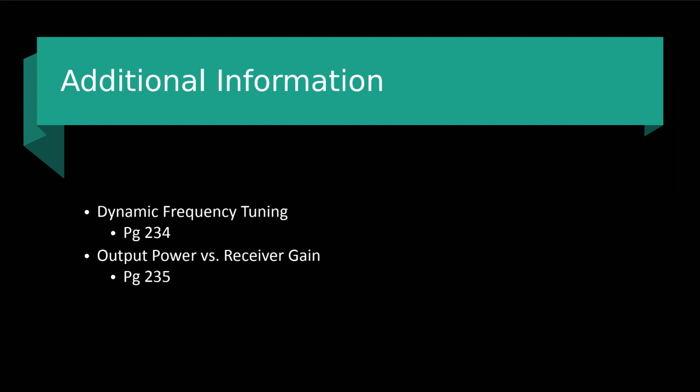Make sure you're reading up on dynamic frequency tuning, and review the difference between transducer output power and receiver gain on page 235 of the textbook. A lot of information, but we're coming more into how we actually scan in lab and clinical, so this should be piecing together. Happy to answer any questions and walk through concepts in lab.